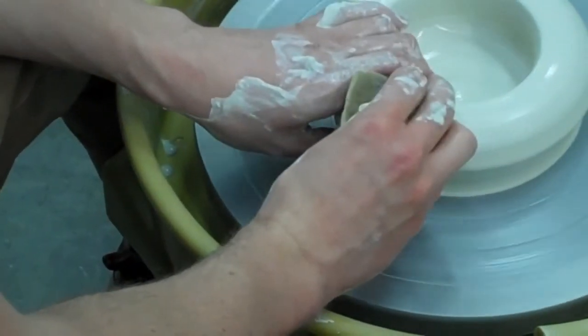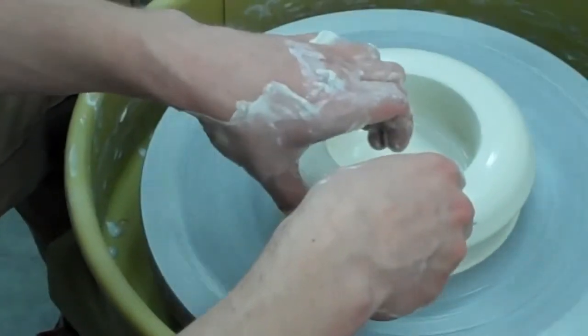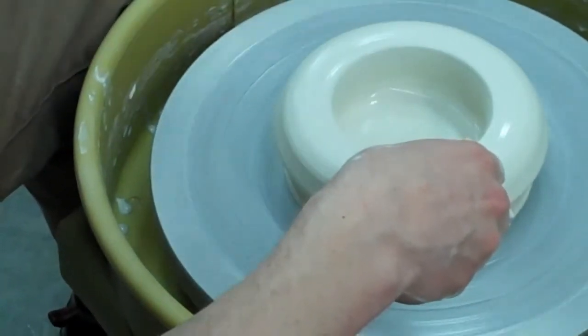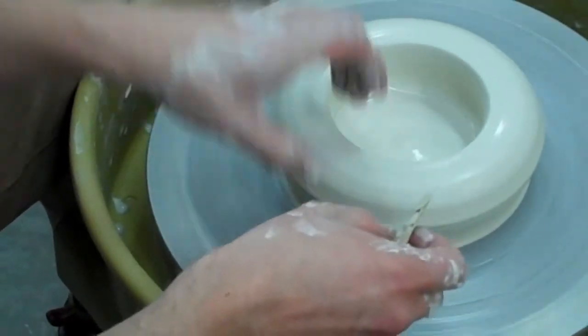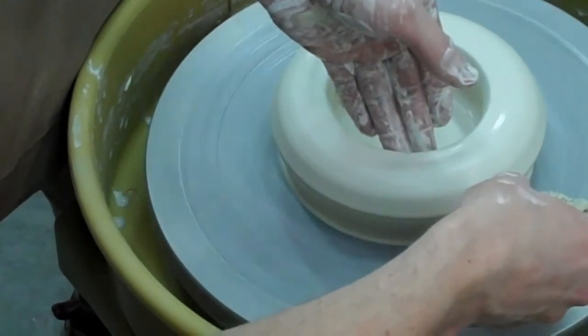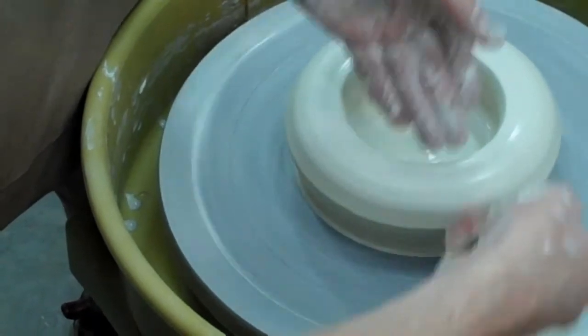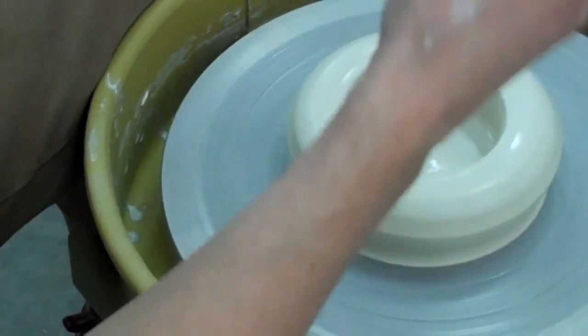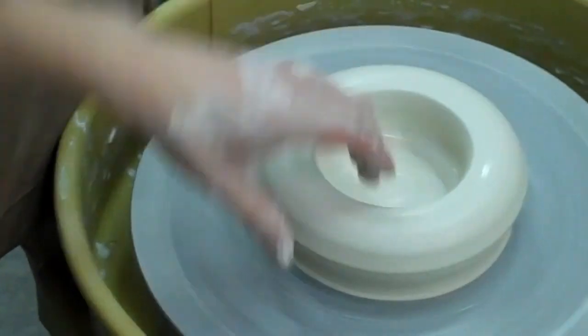On these first pulls, especially with this amount of clay, I like to use this grip method where I'm only pulling with one hand, pretty much. The other hand is back here too, helping, but instead of having the right hand on the outside and the left hand on the inside and using these points of contact to pull up, the point of contact is like this.